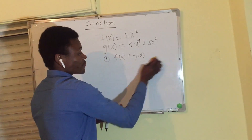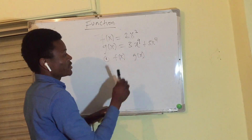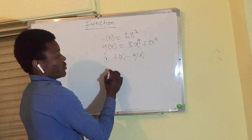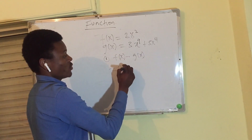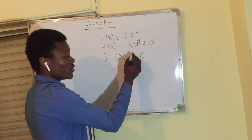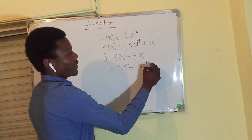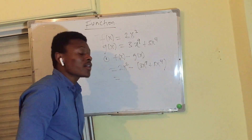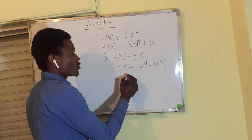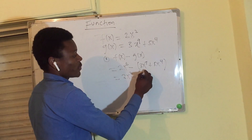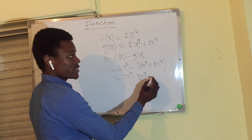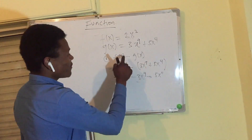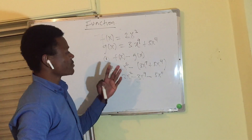For subtraction, f of x minus g of x: we take f of x which is 2x squared, minus g of x which is 3x to the power of 9 plus 5x to the power of 4. Distributing the negative sign gives us 2x squared minus 3x to the power of 9 minus 5x to the power of 4.